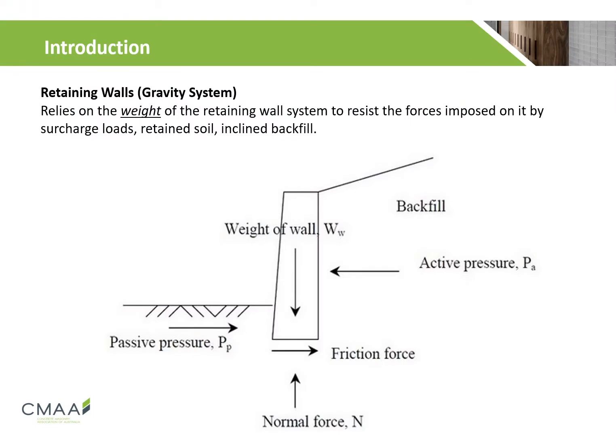Segmental retaining walls consist of modular concrete blocks that interlock with each other. A segmental retaining wall uses the dead weight of the unit to resist lateral earth pressures. They can be soil reinforced with geogrids to help support very high loads, which would typically cause failure in an unreinforced wall.